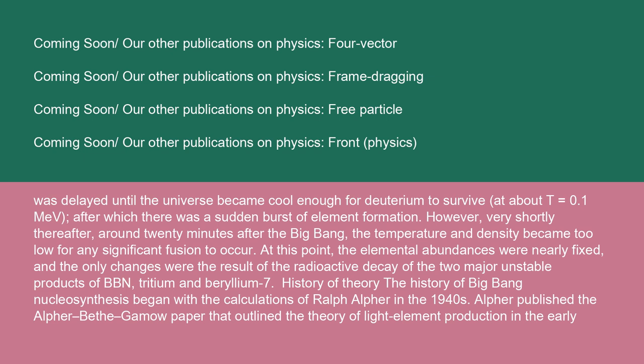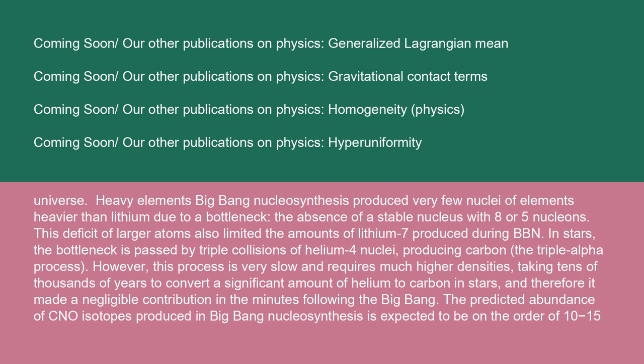History of theory: The history of Big Bang nucleosynthesis began with the calculations of Ralph Alpher in the 1940s. Alpher published the Alpher-Bethe-Gamow paper that outlined the theory of light element production in the early universe.